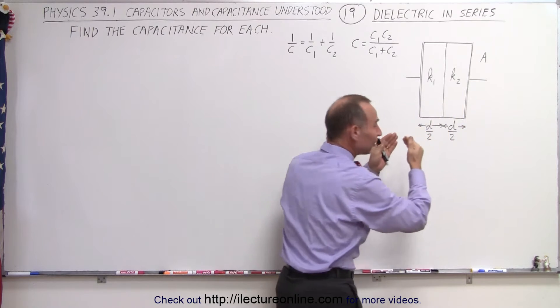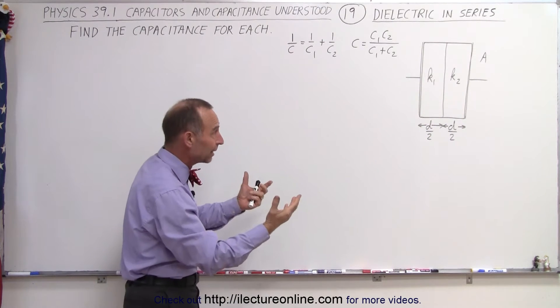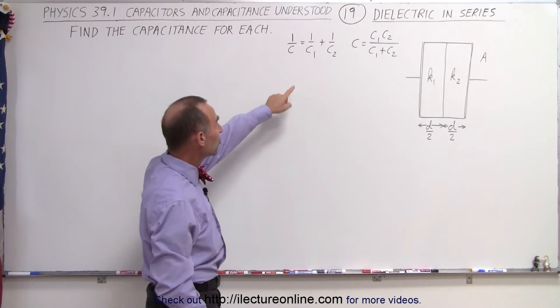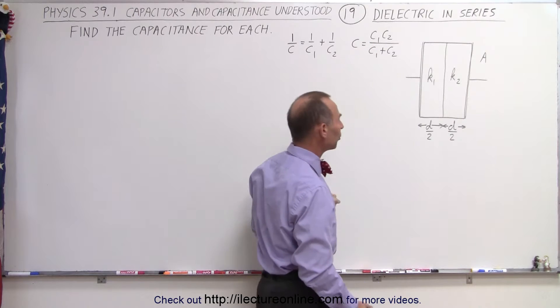We can think of this as two separate capacitors in series rather than in parallel. Since we're going to be adding capacitors in series, we have to use the one-over rule, or since there's only two pieces, we can use the product over the sum rule.